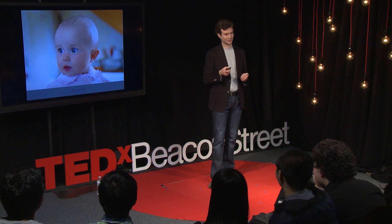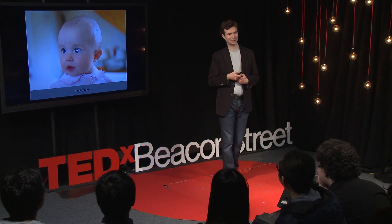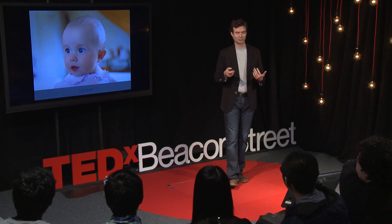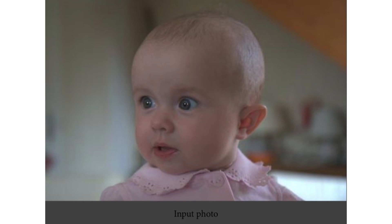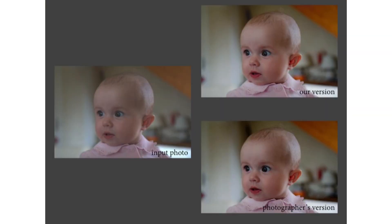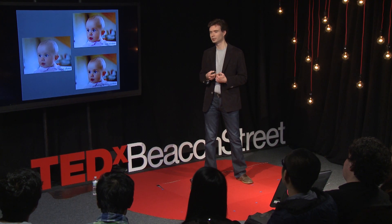Here's another example — my niece. She's very cute. But the picture was a bit flat and didn't have much pop to it. We were able to do that with our algorithm, and again, we compared to what the photographer did. It's not exactly the same, but close enough that it would be useful. That's the first step: how to go from a picture straight off the camera to something that's better. It's not very subjective yet, but it helps a lot compared to using complex software.